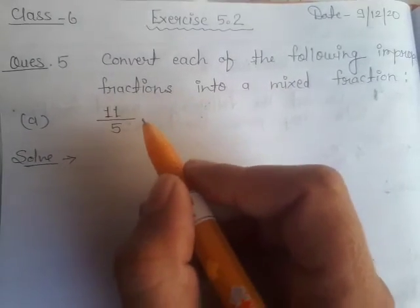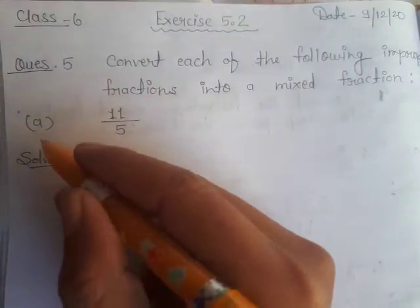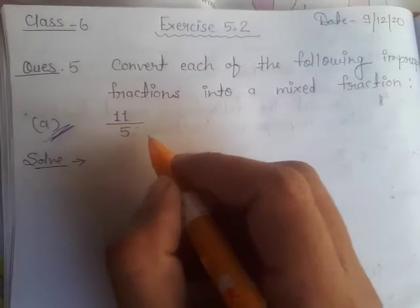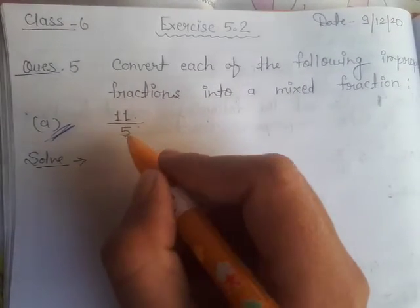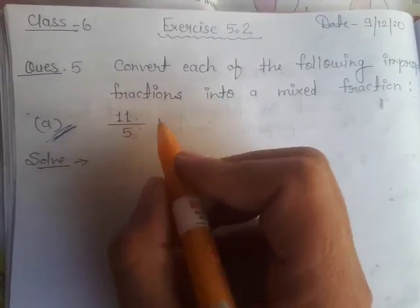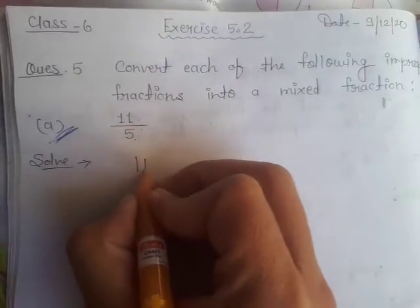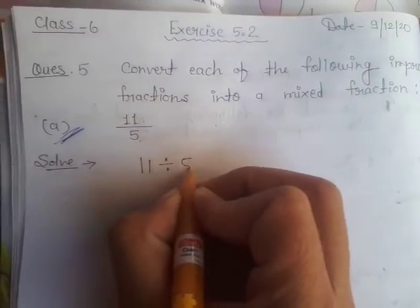So question number first A: 11 by 5. That means 11 is divided by 5.